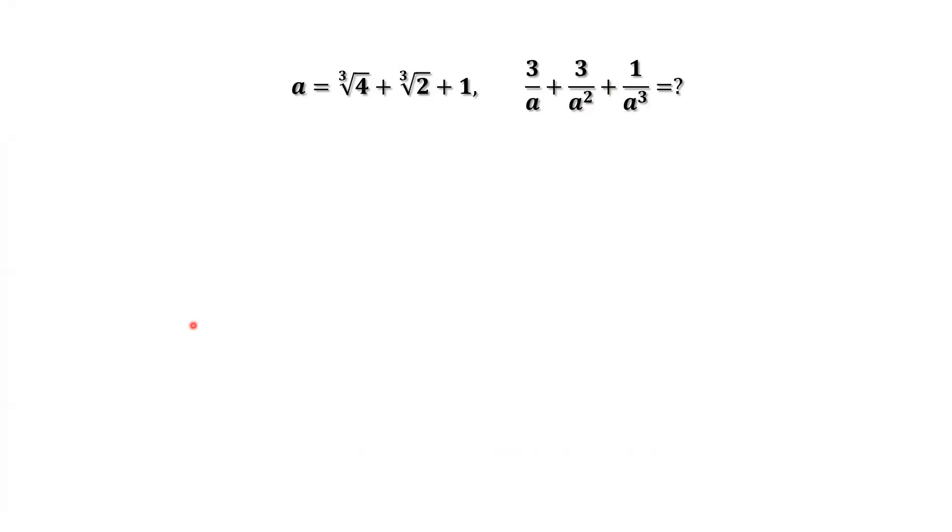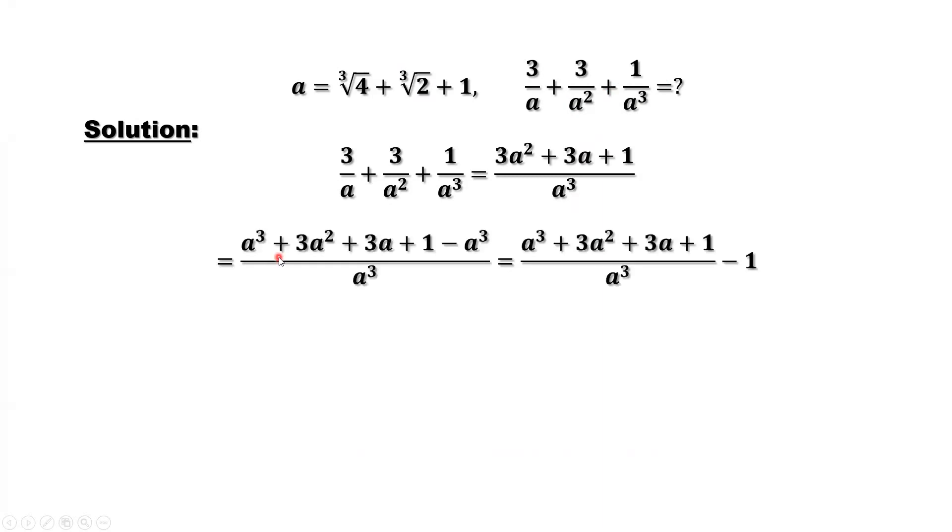First of all, we need to simplify this expression. Consider the common denominator as a to the power of 3. In the numerator, we add one term, a to the power of 3, and minus this term. Keep it balanced.